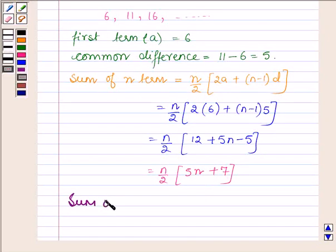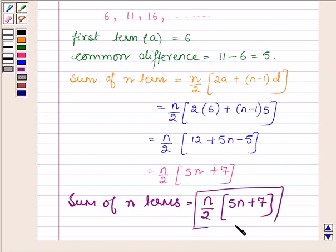Thus the sum of n terms is equal to n upon 2 into 5n plus 7. This completes the session. Take care and bye for now.